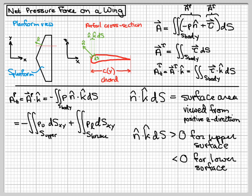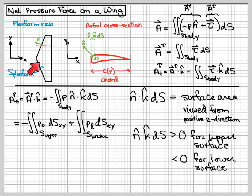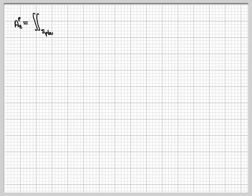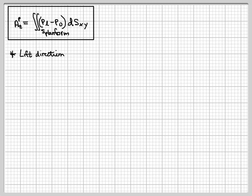For the lower surface, I get the same thing except with a plus sign: plus P_l dS_xy. The reason for the plus here is that N-hat dotted with K-hat is a negative value for the lower surface, which flips the sign of that integral. So the final result is that the pressure force in the Z direction is P_l minus P_u integrated over the planform area.